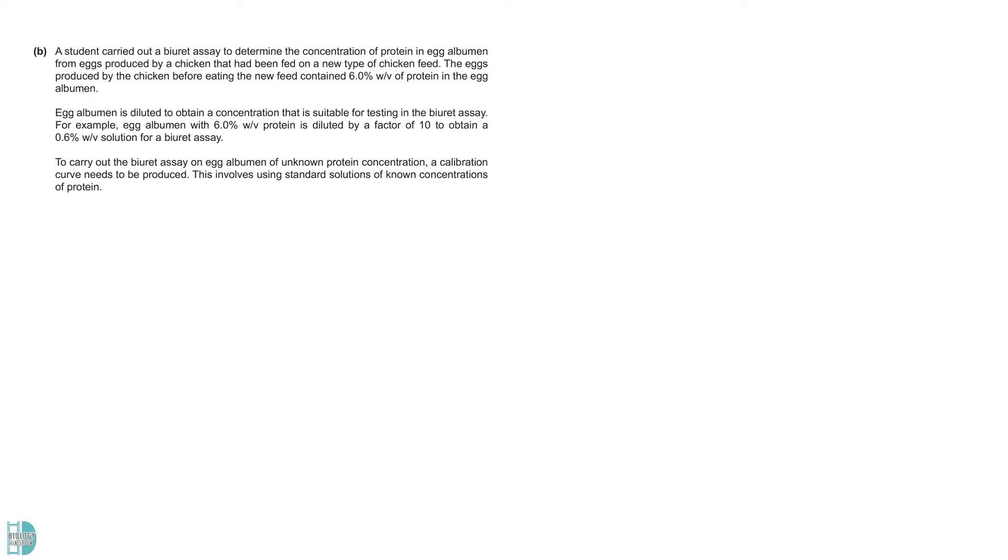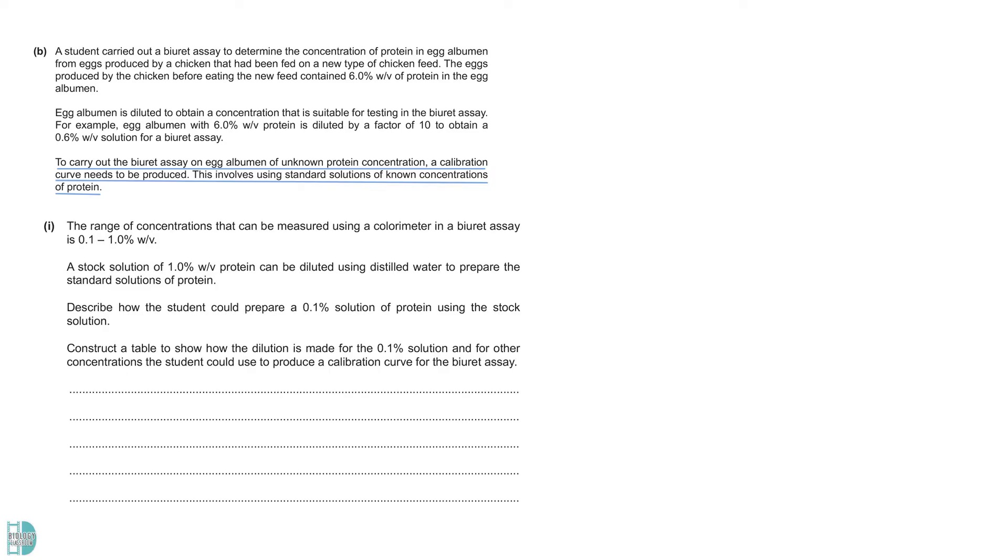Part B talks about an experiment done by a student to determine the concentration of protein in egg albumin from some eggs. A calibration curve needs to be produced by preparing a range of standard solutions with known concentrations of protein. Question 1 says that the range we want is 0.1% to 1% weight in volume. The question wants you to describe how you could use a stock solution which is 1% to prepare a 0.1% solution of protein. Then, you have to construct a table to show the other concentrations and how they are made. To dilute a solution by a dilution factor of 10, we need to add the stock solution with distilled water in a 1 to 9 ratio.